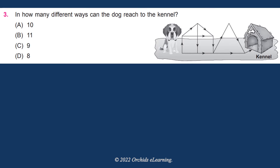In how many different ways can the dog reach the kennel? Look at the figure carefully. The answer is A: 10.